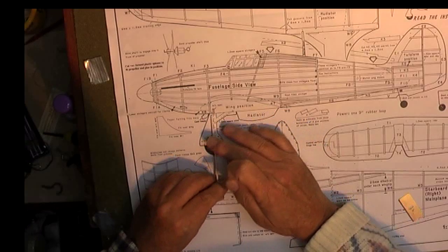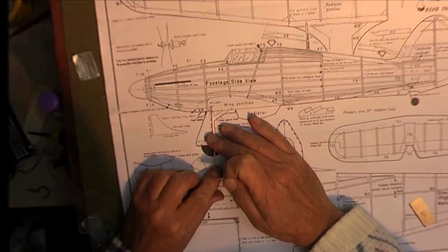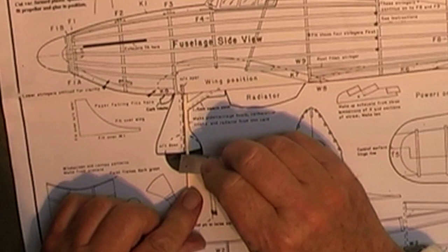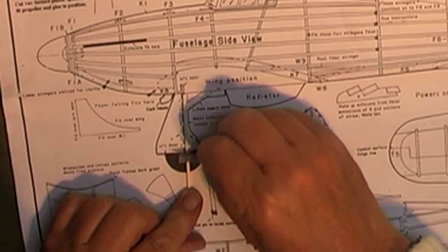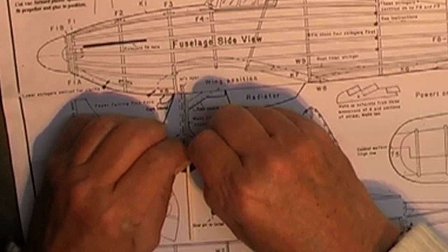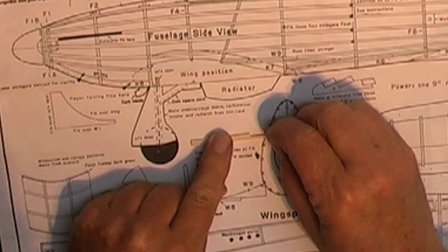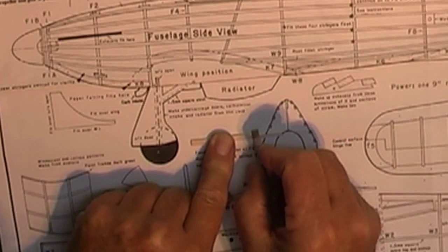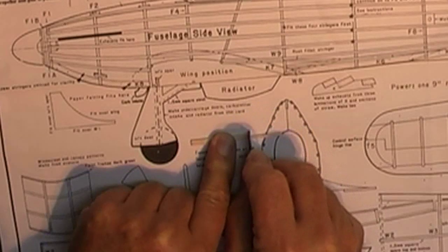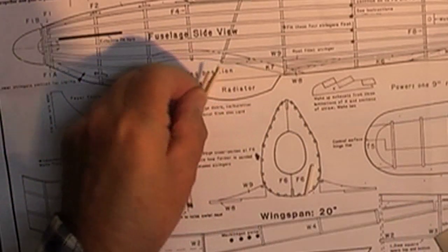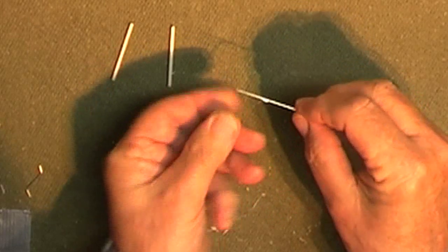Back to the undercarriage. I cut to length some balsa strips which will be glued and bound to the undercarriage legs. These will act as stand-off supports for the imitation cover panels.